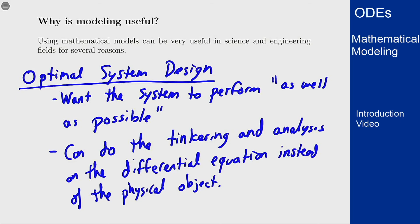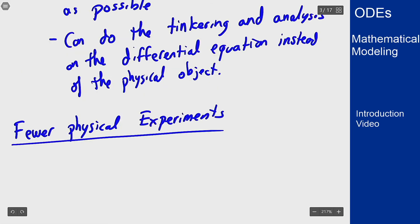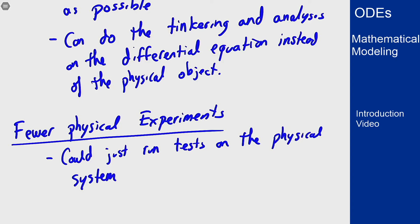Sort of parallel to this is the idea that with a model you can do fewer physical experiments. All the tinkering to find this optimal design mentioned above could just be done in the physical model, but then you're running this experiment over and over and over again trying to figure out what the best arrangement of parameters is to make it work. However, that has a pretty big cost associated to it.